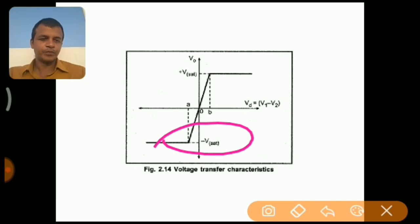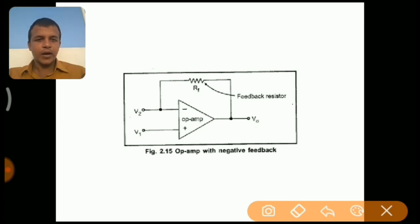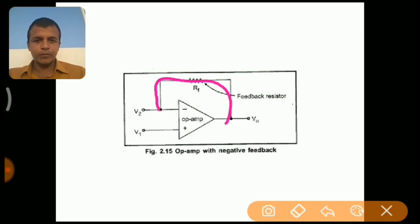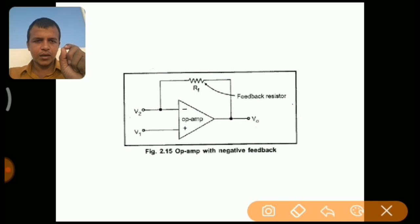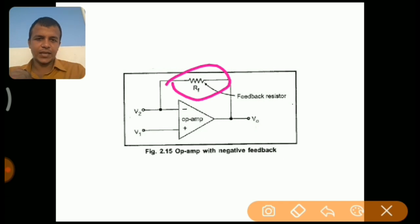We can control the high gain by giving a feedback to the input at the inverting terminal. This figure shows how a feedback is established in the operational amplifier. A feedback path is taken from the output voltage and given to the inverting terminal along with the input voltage. The feedback is established through a feedback resistor.